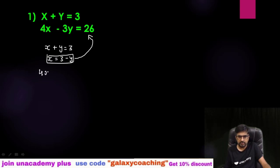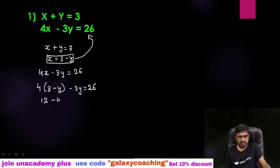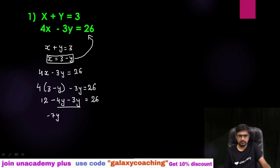Now I have the value of x and I am going to keep it in equation number two. We have 4x minus 3y equals 26, and x equals 3 minus y. So on this x, I am going to put the value 3 minus y. Let me substitute 4 times (3 minus y) in place of x — which I got from the first equation — minus 3y equals 26.